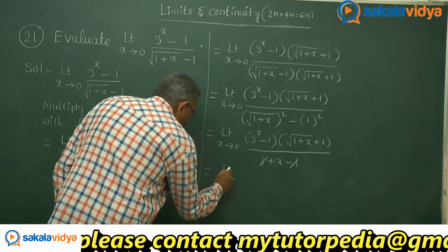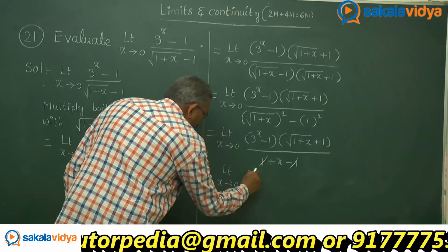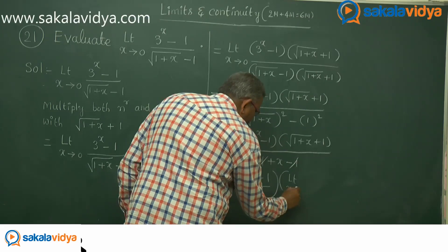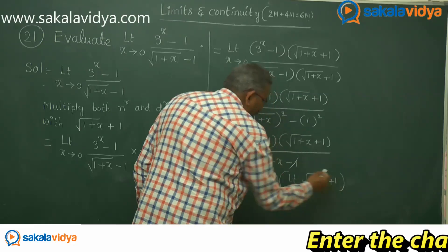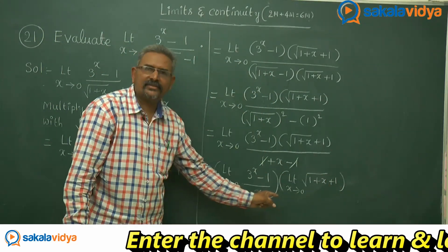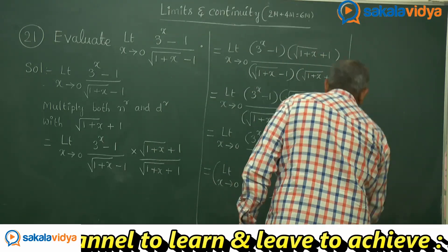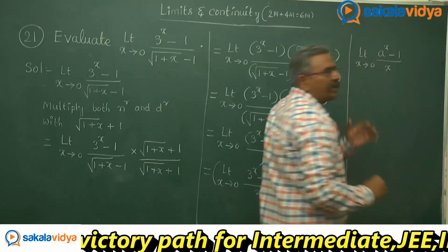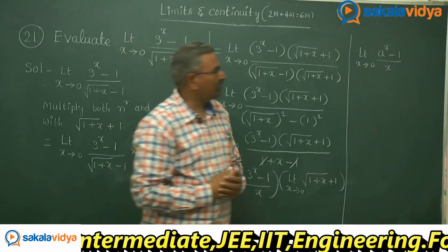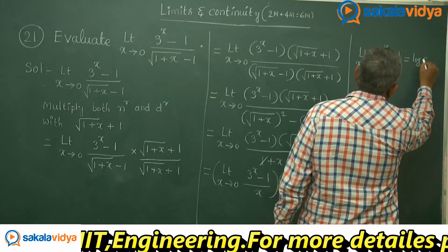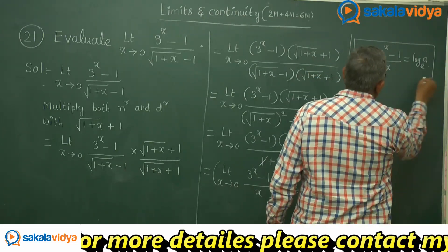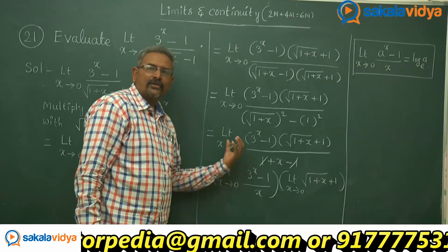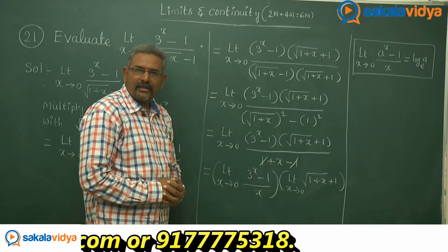We can apply the limit to both functions separately: limit x tends to 0 of 3 power x minus 1 by x, multiplied by limit x tends to 0 of root of 1 plus x plus 1. The first limit is one of the standard results: limit x tends to 0 of a power x minus 1 by x equals log a to the base e. So limit x tends to 0 of 3 power x minus 1 by x equals log 3 to the base e.